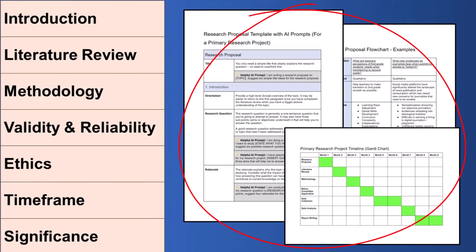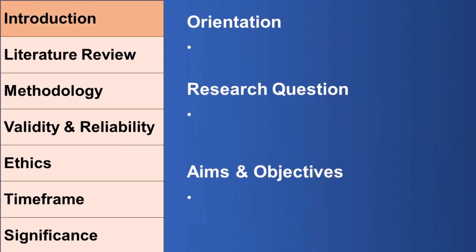These steps are also covered in the templates that you can download through the link in the description. The templates will have explanations of what to cover in each section in more detail, as well as some helpful AI prompts to help you brainstorm what to write in each section specifically for the project that you are working on.